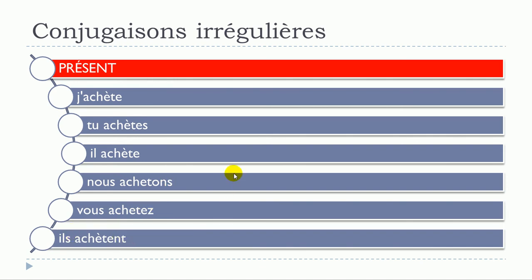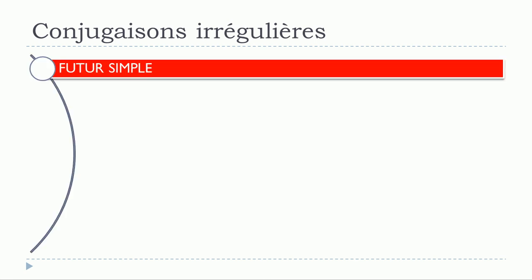The only modification we have to make is to put an accent grave on the E. This concerns only je, tu, il, and ils/elles at the plural form. For nous and vous, you don't change anything — you just follow the regular rule for first-group ER verbs. Remember you need to add the accent and pronounce it: j'achète, tu achètes, il achète, ils achètent. For nous achetons and vous achetez, the E is silent.